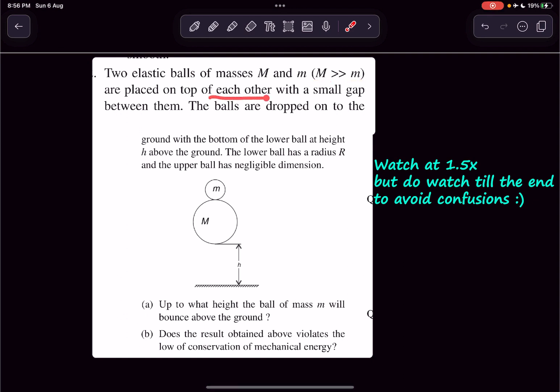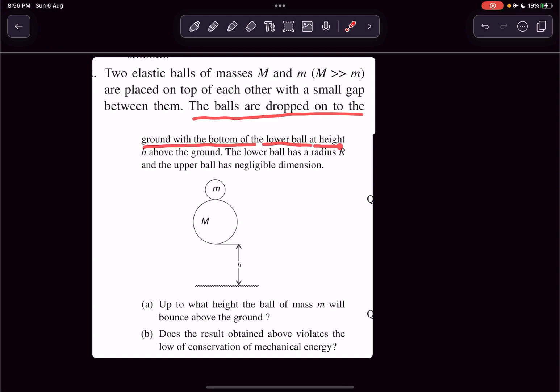They're placed on top of each other with a small gap between them, so these balls are not touching. The balls are now dropped onto the ground with the bottom of the lower ball at a height h above the ground. The lower ball has a radius of R and the upper ball has negligible dimensions.